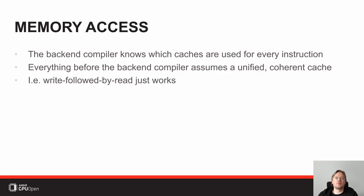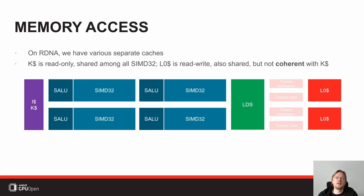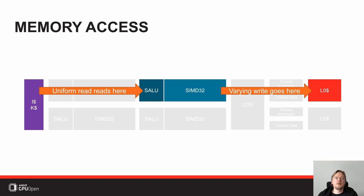If you look at RDNA, there is a K-cache and there's an L0 cache, and they are not coherent with each other. The K-cache is read-only on top of this. So if you read a value you could read it from the K-cache, then if you write to this value you write into the L0 cache. If you read again and issue another K-cache load, you will read from the K-cache and get the old value, because nothing has said the K-cache needs to be flushed in the meantime.